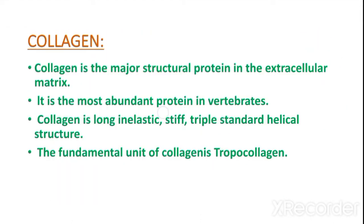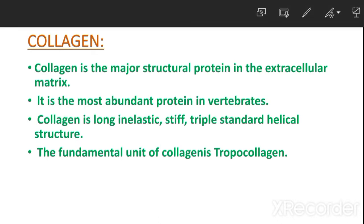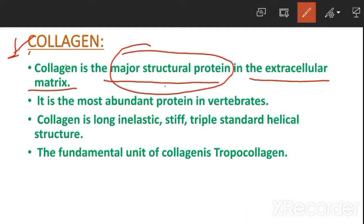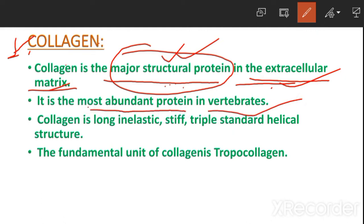Collagen is one type of fibrous protein. It is the major structural protein in the extracellular matrix, and it is the most abundant protein in vertebrates.